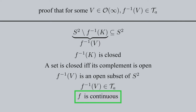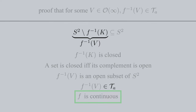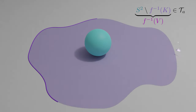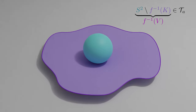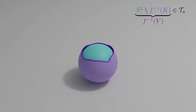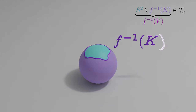To give you a visual interpretation of what's happening, imagine that this purple subset is K. If we inversely project K, it wraps itself up to the sphere. The preimage of V, which is the complement of F inverse of K in S2, must be an open neighborhood of the north pole.